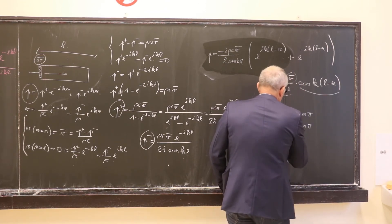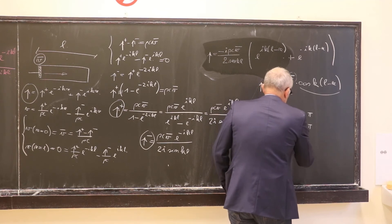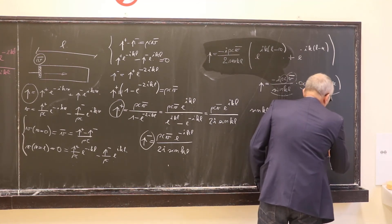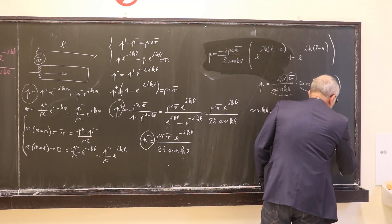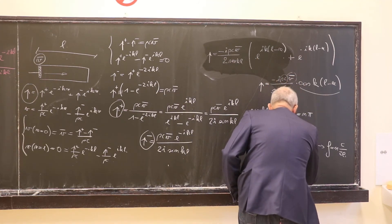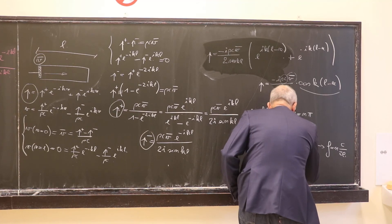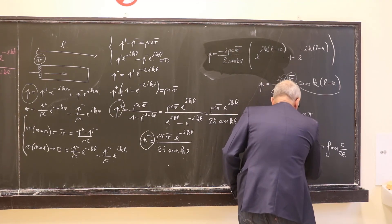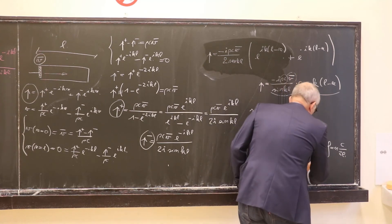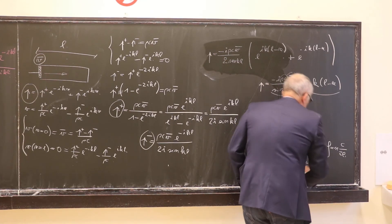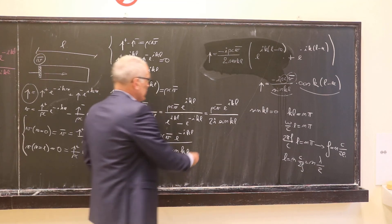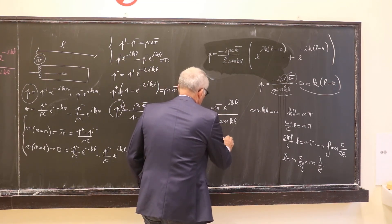Since k equals ω/c, we have ω/c times l equal to nπ, and since ω equals 2πf, this means the frequency equals n times c divided by 2l. We can also write that this happens when the length equals n times half-wavelengths, since c/f equals λ. So when the length is an integer number of half-wavelengths, the sound pressure is equal to infinity — we say that we have reached acoustic resonance of the duct.